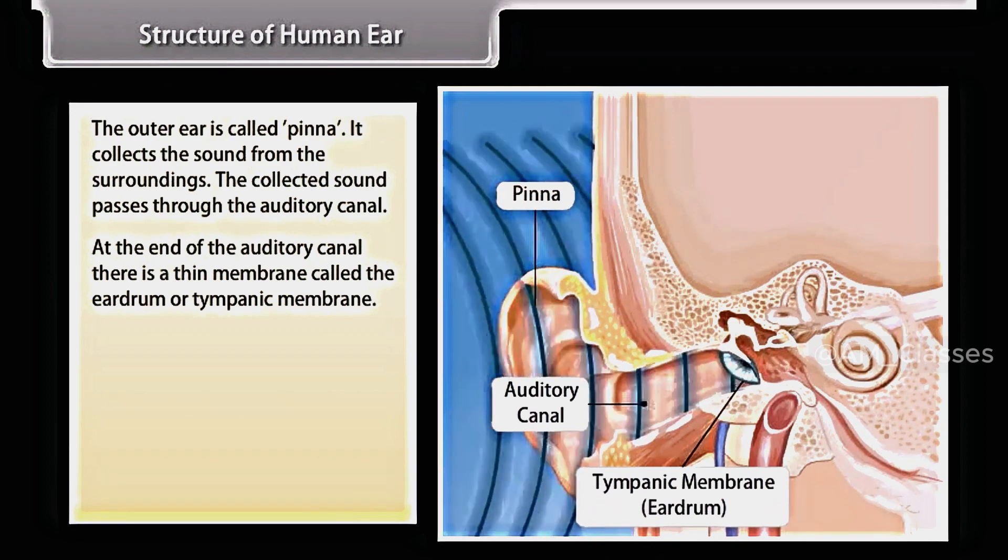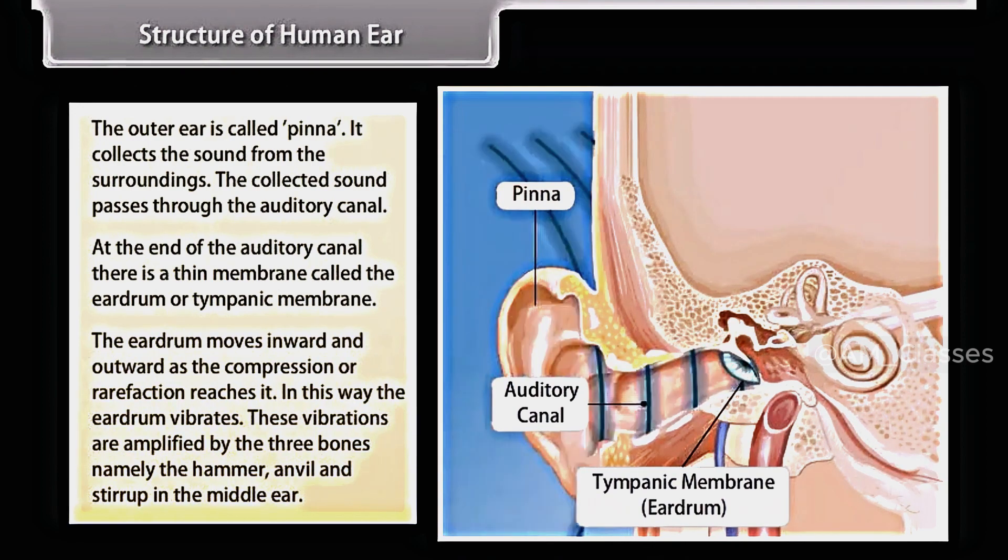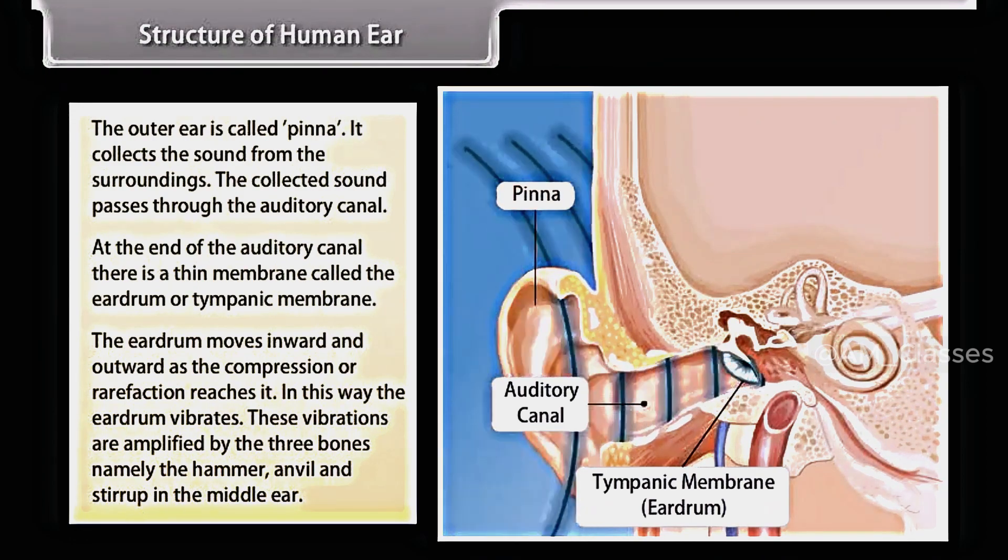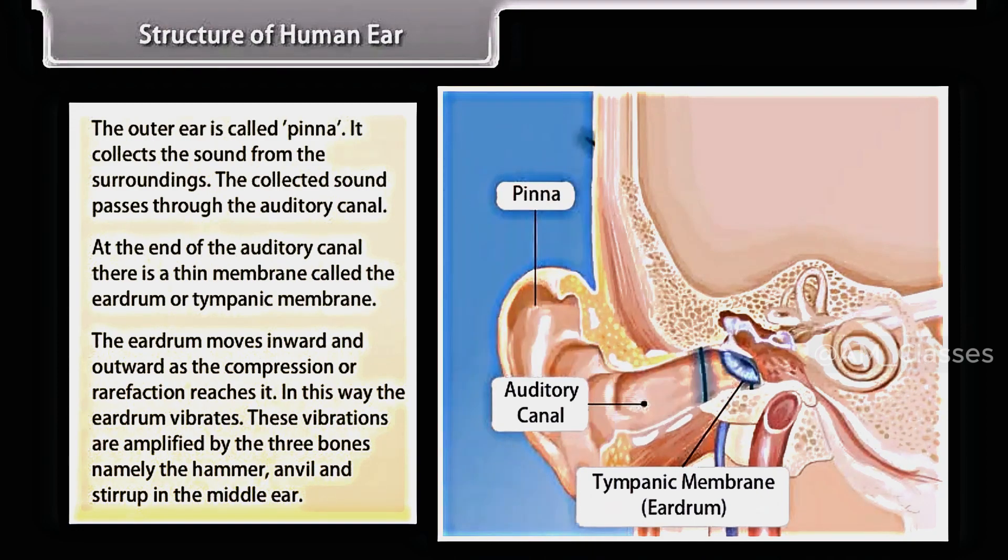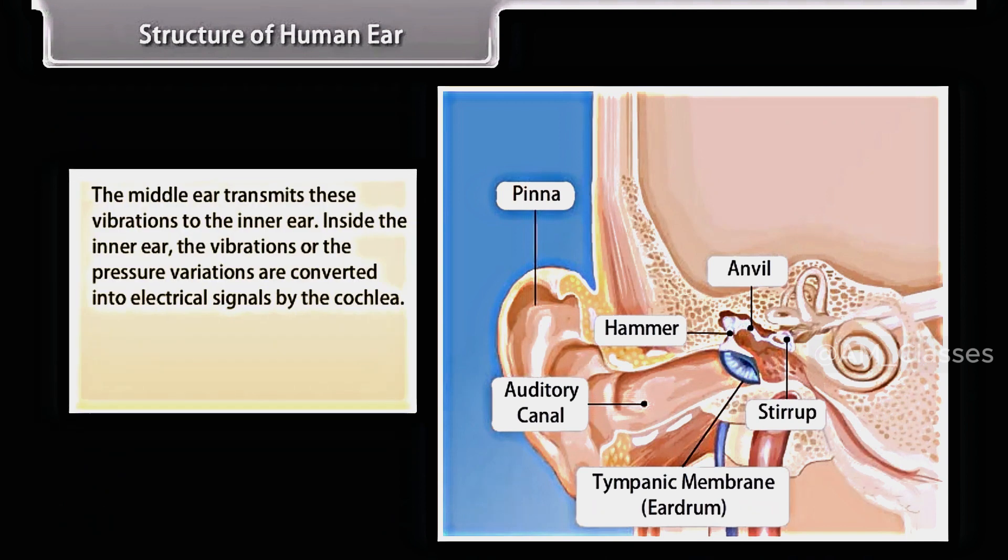The eardrum moves inward and outward as the compression or rarefaction reaches it. In this way, the eardrum vibrates. These vibrations are amplified by the three bones, namely the hammer, anvil, and stirrup in the middle ear. The middle ear transmits these vibrations to the inner ear.